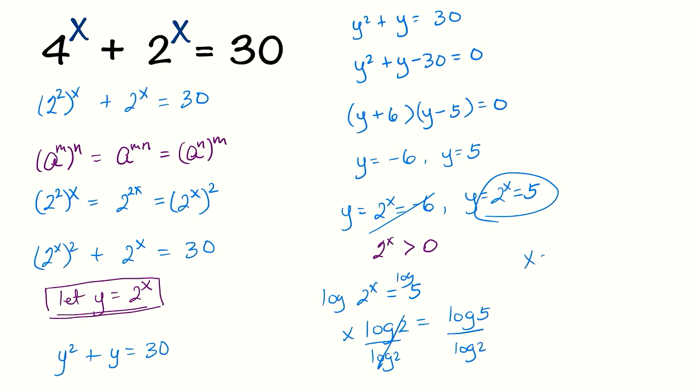We get x equals log of 5 divided by log of 2. If you plug this into a calculator, this will give you approximately 2.32, and that's our answer.